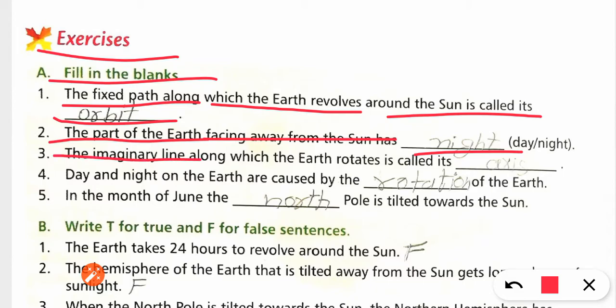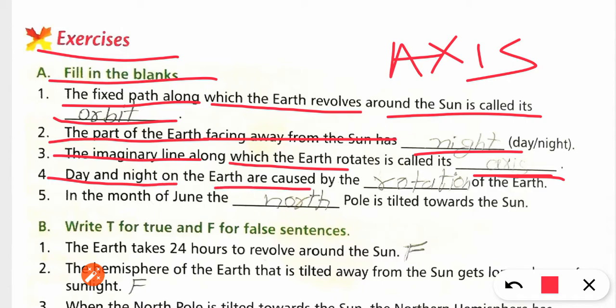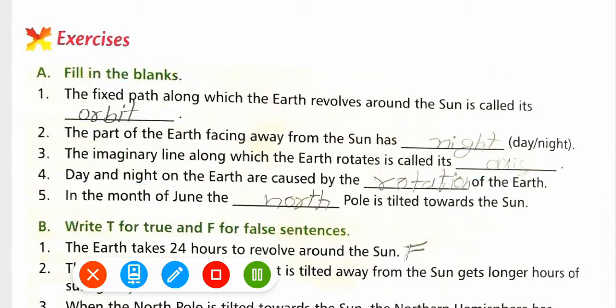The imaginary line along which the earth rotates is called axis, A-X-I-S. Day and night on the earth are caused by rotation. In the month of June, the north pole is tilted towards the sun. I hope this much is very clear.